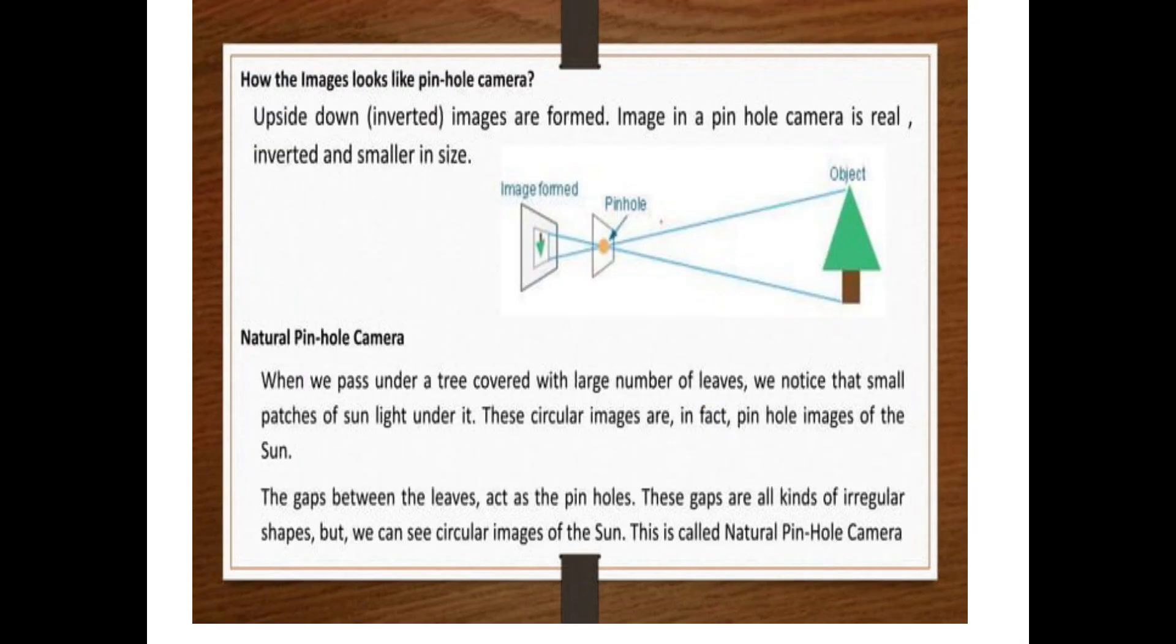How does the image look like in pinhole camera? The image would be seen upside down. It means inverted images are formed. Image in the pinhole camera is real, inverted, and smaller in size.